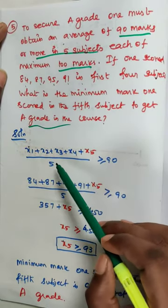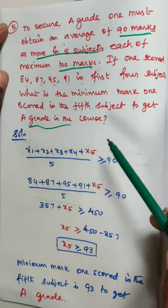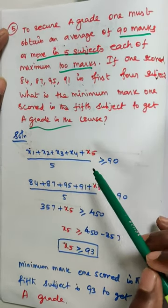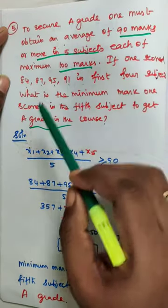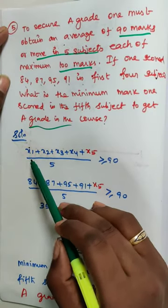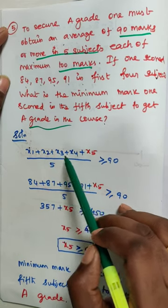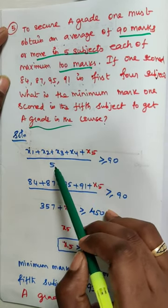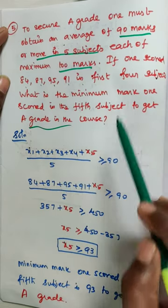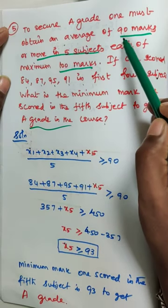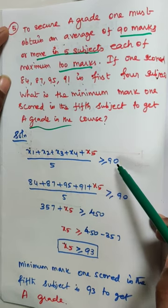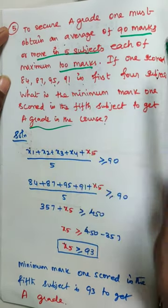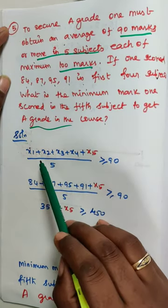So you already know the given marks for 5 subjects. I am taking x1 plus x2 plus x3 plus x4 plus x5, the whole divided by 5 subjects, which is more than 90 marks, so greater than or equal to 90. Average of 90 marks or more in 5 subjects.